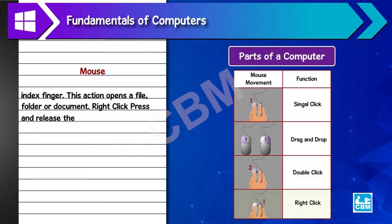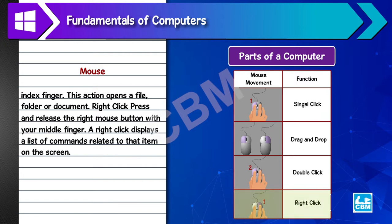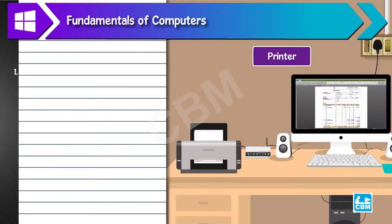8. Right click - press and release the right mouse button with your middle finger. A right click displays a list of commands related to that item on the screen. Printer: 1.